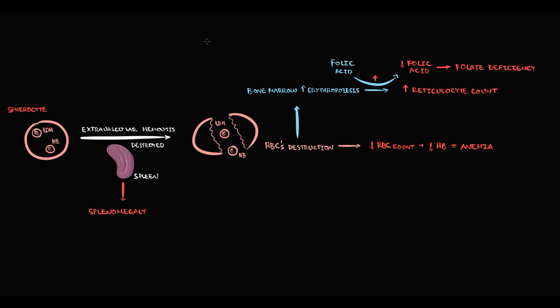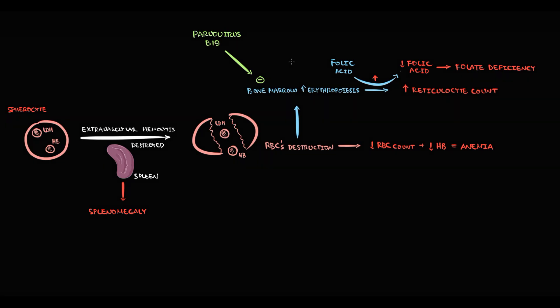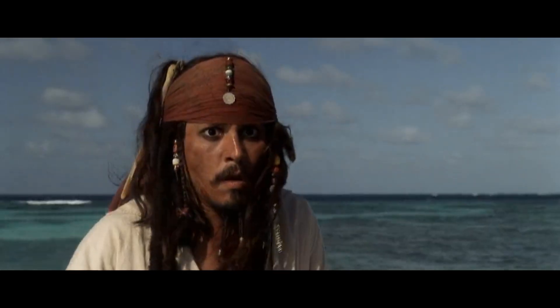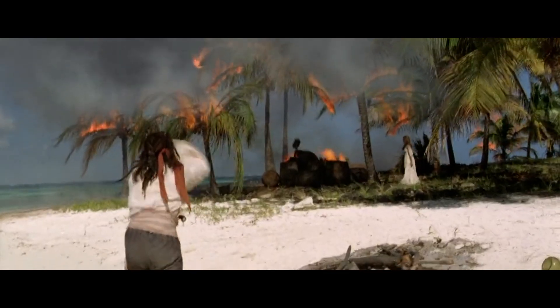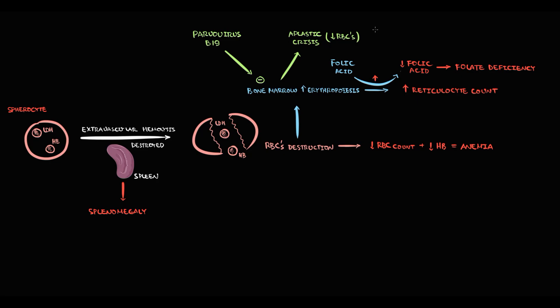We have to know that some infections can inhibit erythropoiesis. The most common is parvovirus B19. A sudden decrease in red blood cell production combined with an increased rate of red blood cell destruction can cause aplastic crisis — basically a state when the quantity of red blood cells in the blood suddenly decreases. In predisposed patients, such as those with thalassemia or hereditary spherocytosis, parvovirus B19 infection can create a huge problem.